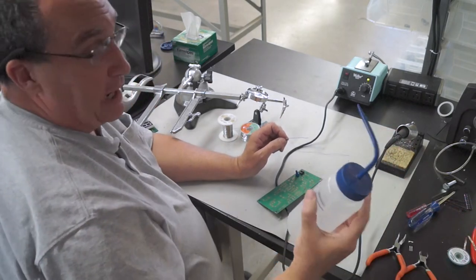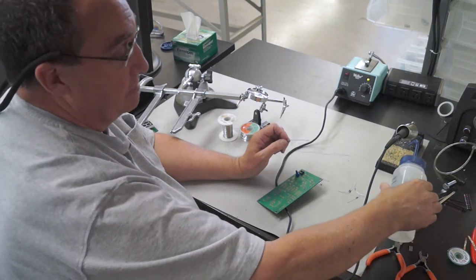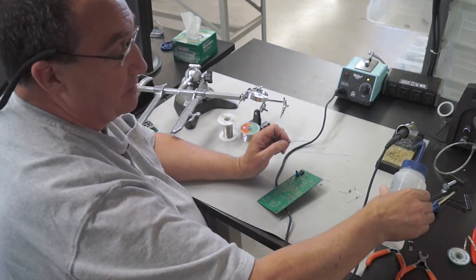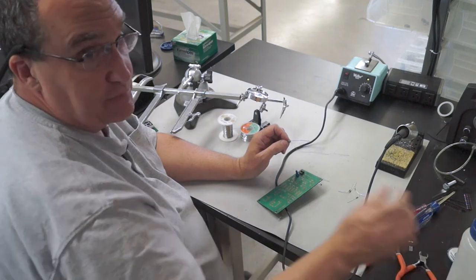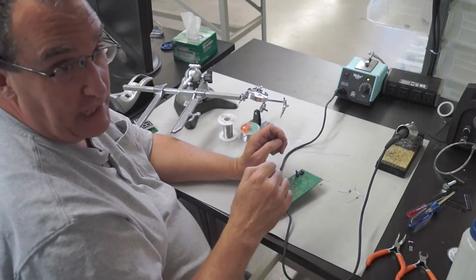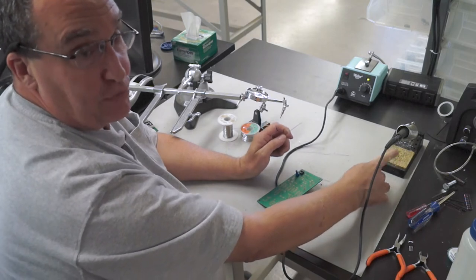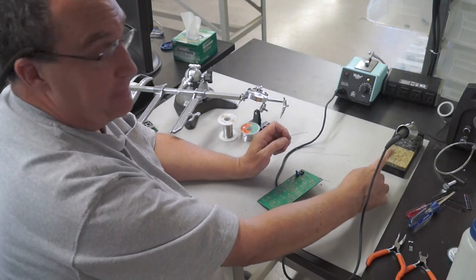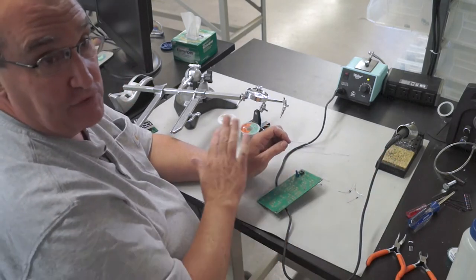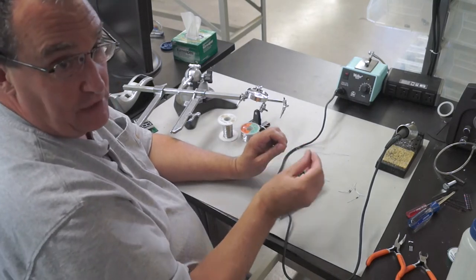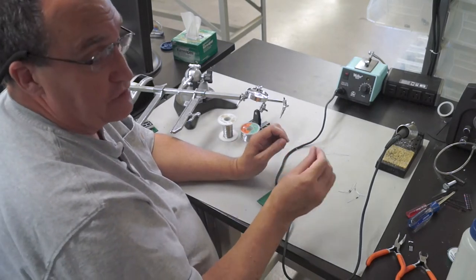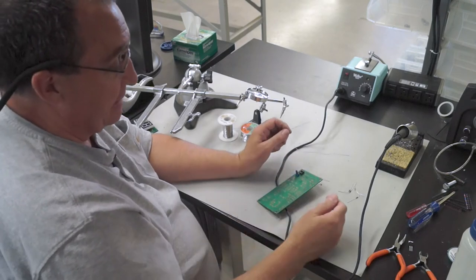In our lab, we have water bottles that we can use to wet the sponge. You don't want to soak it. You just want to make it damp so you can clean off the tip as you solder. In some of our labs, we have kind of a Brillo pad type brass pad. Those you do not have to apply water to. You can just use them as they are. Don't put water into those. Only water on the sponge soldering iron.